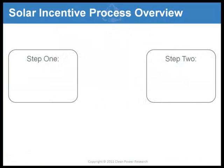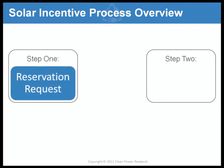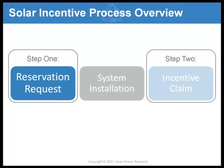In a typical two-step program, you'll use PowerClerk to apply for an incentive reservation. Once the installation is complete, you'll log into PowerClerk to make a claim for the incentive. For more information on the reservation request process, please watch the reservation request segment of this tutorial series. In this tutorial, we'll cover how to file an incentive payment claim.